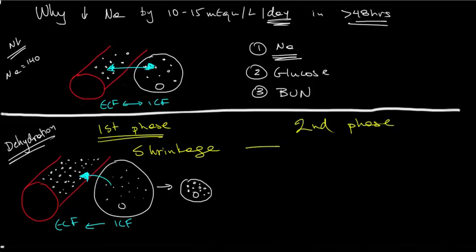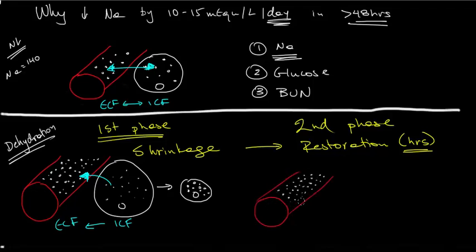So the second phase acts to restore that cell volume, so the restoration. That also happens in a matter of hours. It doesn't happen immediately but you should assume it has happened by the time you see your patient in the emergency department. So let me make up here my hypertonic blood vessel or my dehydrated patient and all its densely osmotic particles inside and right next to it my tiny brain cell that has shrunk down.